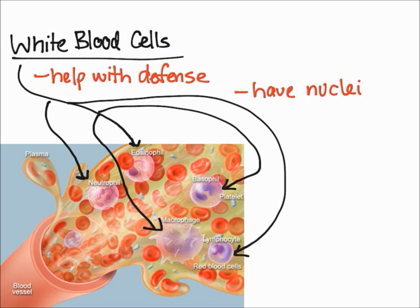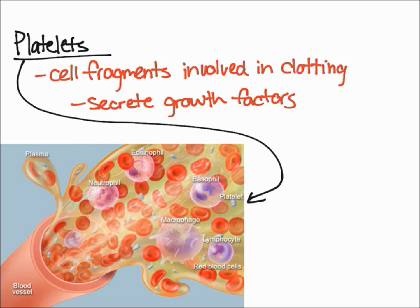Finally, let's talk about the last component of blood: platelets. Platelets are cell fragments that are involved in clotting, as well as other means to minimize blood loss. One way they can minimize blood loss is by secreting growth factors, which are signals that cause new cells to be made. These growth factors can promote the growth of blood vessels.